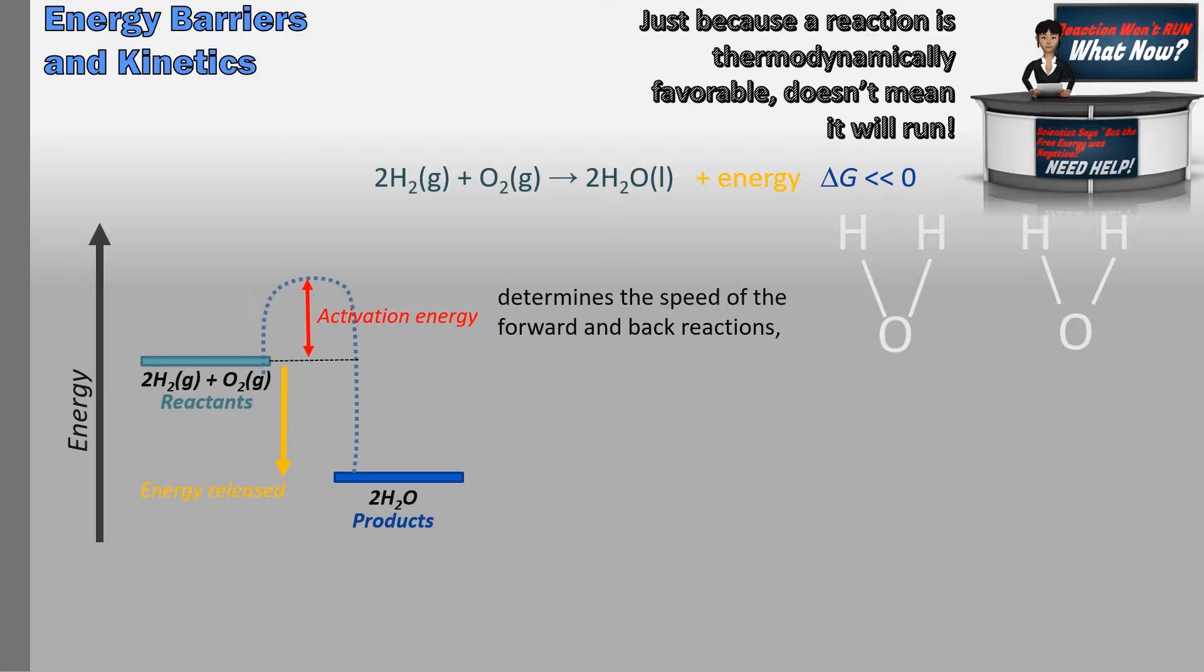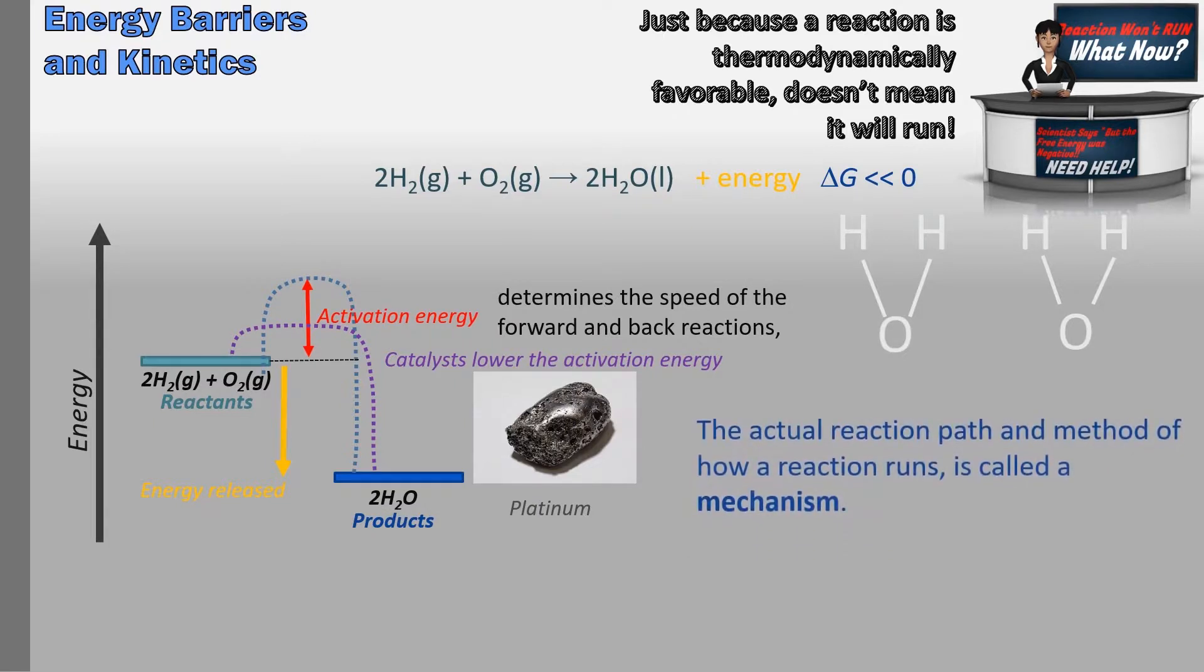So how about the addition of a piece of platinum, a catalyst? Well, what happens is that we now have provided the reaction an alternative path, one that has a much lower energy barrier that's easier for the reaction to get over. Catalysts lower the activation barrier in reactions. Again, as soon as one molecule of water forms, there will be more than enough energy emitted to spark the other reactions sending them over the barrier.